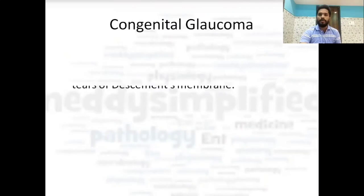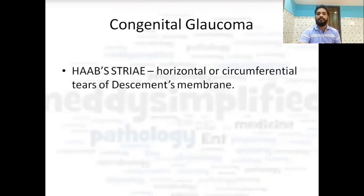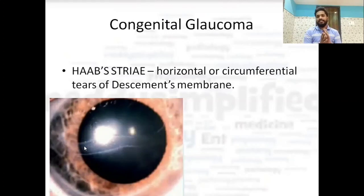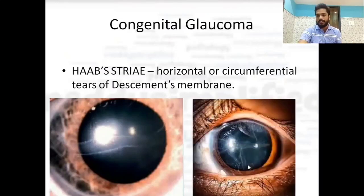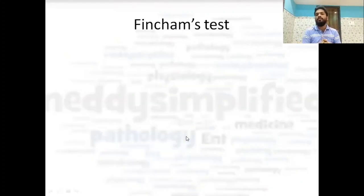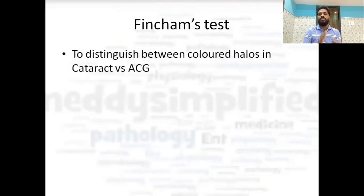In congenital glaucoma there is a presence of Haab's striae — horizontal or circumferential tears in Descemet's membrane. You can appreciate a tear in Descemet's membrane in the center of the image. In another image you can see circumferential horizontal damage; whether it appears as a single line or multiple tears, it is known as Haab's striae.